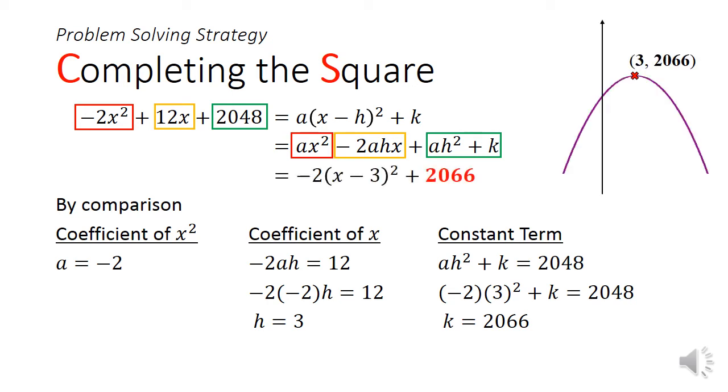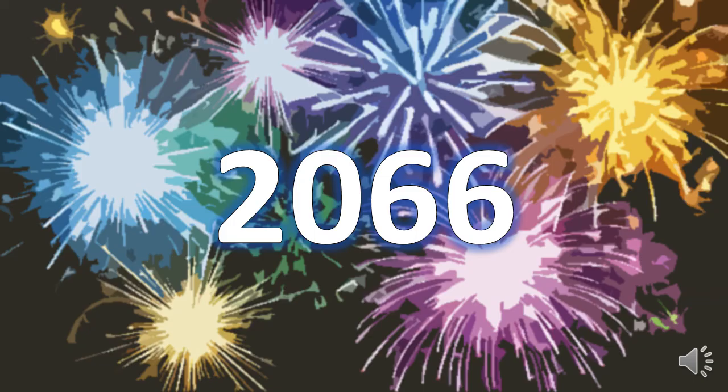This tells us that the quadratic expression will have a maximum value of 2066, which occurs when x is equal to 3. So, did you get the answer?